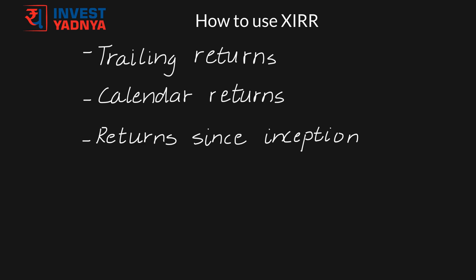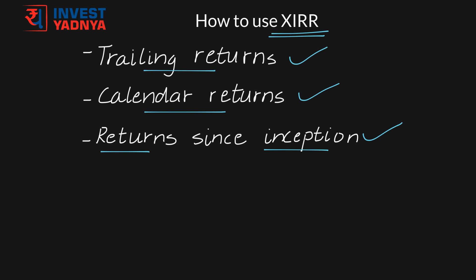In various fund fact sheets and also on various investment websites, you would see trailing returns of a fund, its calendar returns, and the returns the fund has given since inception. But the time frame used to calculate these returns and the time frame of your investment are different. So you can use the XIRR formula in Excel to calculate returns on your investments. Let us see how.